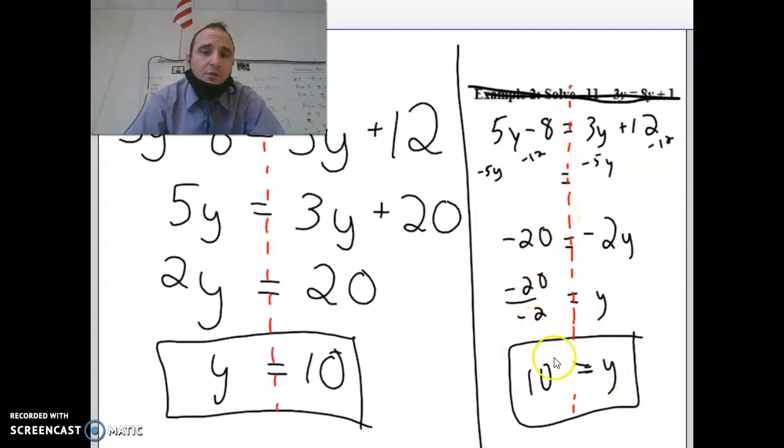This one becomes negative 20 over negative 2, which is 10. So if you notice, no matter if you solve for the variable on the left or the variable on the right, you get the same answer.